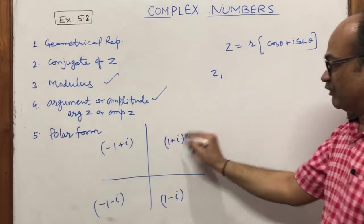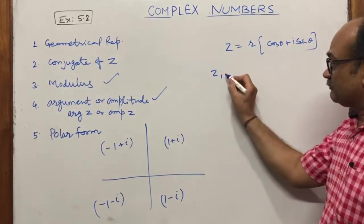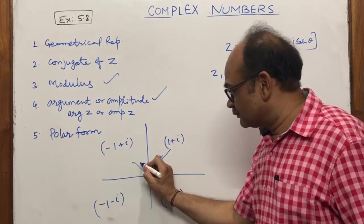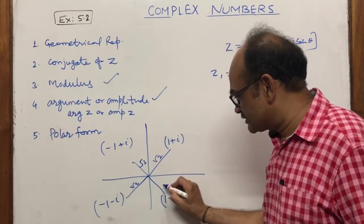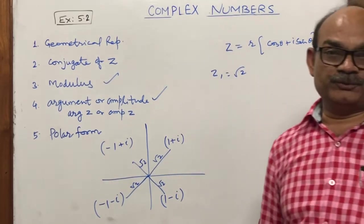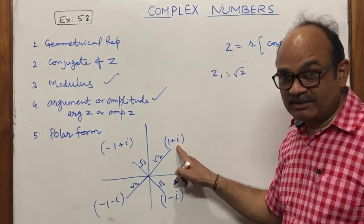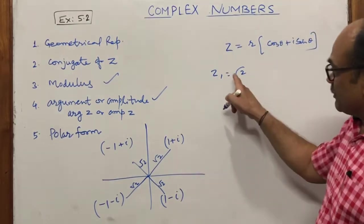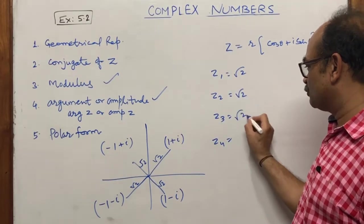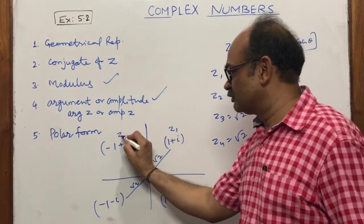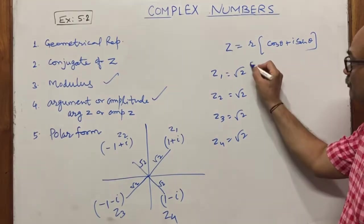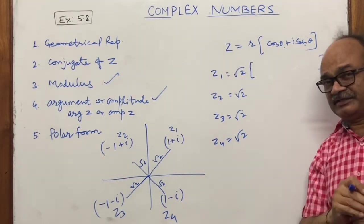Let's take four complex numbers: z1 = 1 + iota, z2 = −1 + iota, z3 = −1 − iota, z4 = 1 − iota — one in each quadrant. For all four, the modulus is √(1² + 1²) = √2, since the real and imaginary parts each have absolute value 1. So for z1, z2, z3, z4, the modulus r = √2.